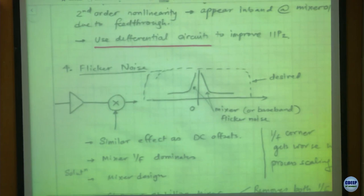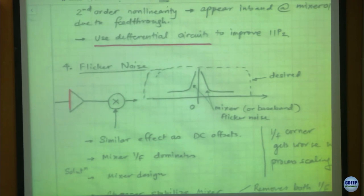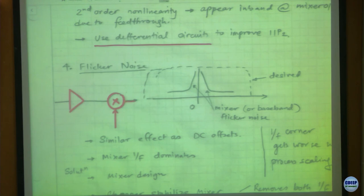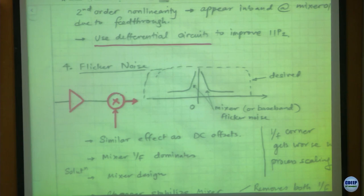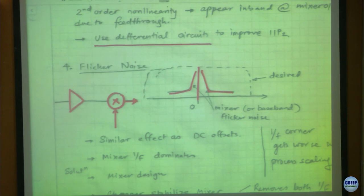The next problem is flicker noise. We have a mixer, and at the baseband output there are a bunch of circuits - baseband filters - all of which will have 1/f noise. That 1/f noise is going to be in your desired band of interest, reducing your SNR. On top of that, the mixer itself by definition also generates 1/f noise because of the way it works. So you have 1/f noise from the mixer and baseband filters right in your desired band.